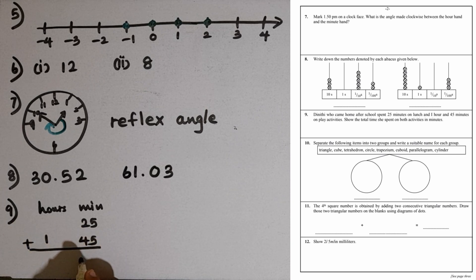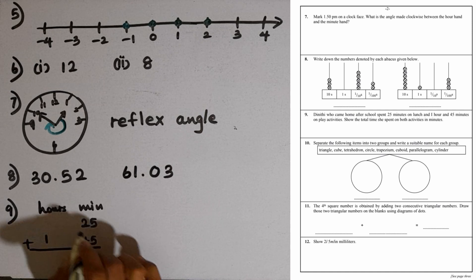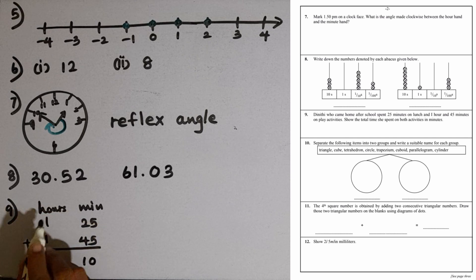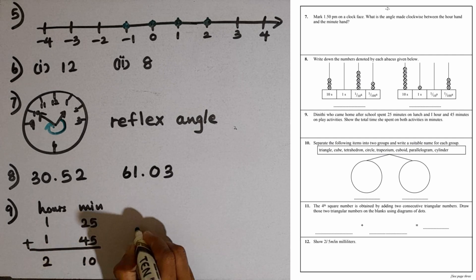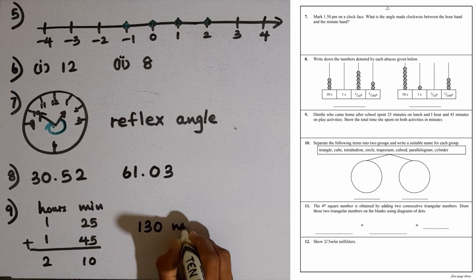The addition is 70. We can't keep 70 here, remaining 10 minutes. We have to take 60 minutes to the hours side as 1 hour. The addition is 2 hours. 2 hours 10 minutes is the answer. But we have to keep it in minutes. 1 hour is 60 minutes, 2 hours is 120 minutes. 120 plus 10 is 130 minutes.